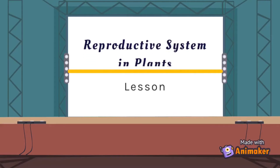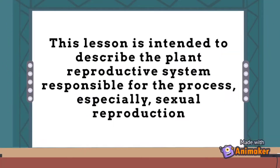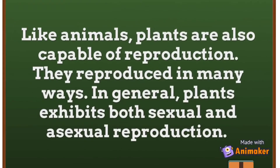Our lesson for today is all about the reproductive system in plants. This lesson is intended to describe the plant reproductive system responsible for the process, especially sexual reproduction. Like animals, plants are also capable of reproduction. They reproduce in many ways.